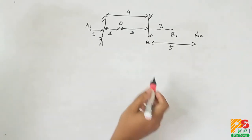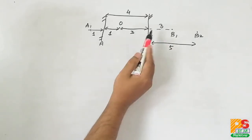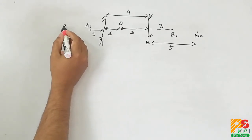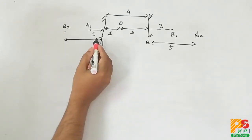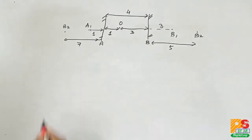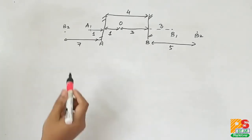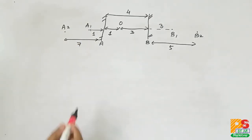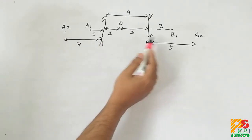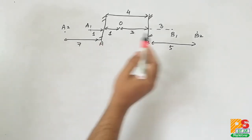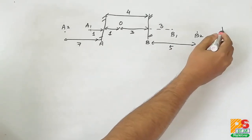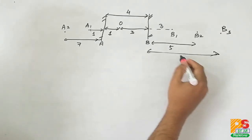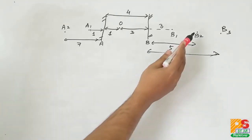B1 will act as a virtual object for mirror A, forming the second image A2 at a distance of 7 cm behind A — since B1 is at 4 plus 3, that is 7 cm. Similarly, A2 will behave as the virtual object for mirror B, which will form image B3 at a distance of 4 plus 7, that is 11 cm behind B.